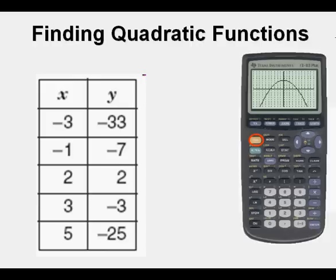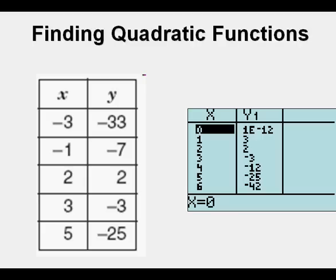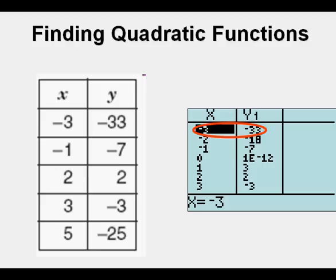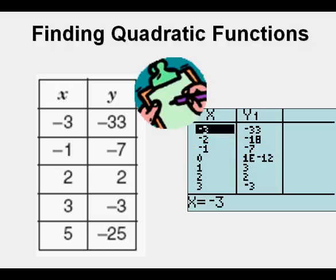And finally we can go to second, graph, to find the table mode, and we can check one by one the points that are input for us. First of all, we see that 2 comma 2 is there, we see that 3 comma negative 3 is there, we see that 5 comma negative 25 is there, and we can scroll up and see that negative 3 comma negative 33 is there, we can see that negative 1 comma negative 7 is there. So all our 5 points are there, we've seen it four ways, check. We're absolutely certain that we're right. We've done it 3 ways, we've seen it visually.